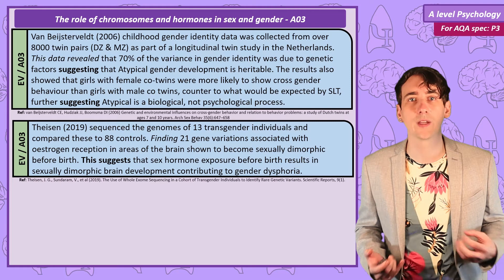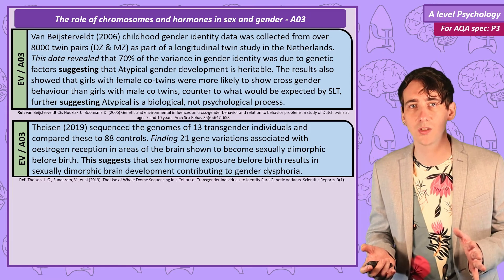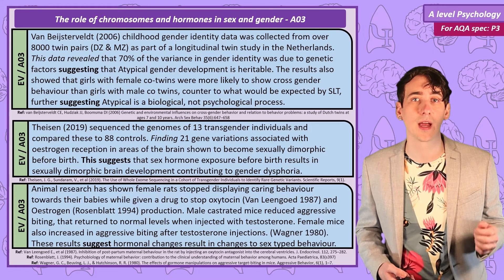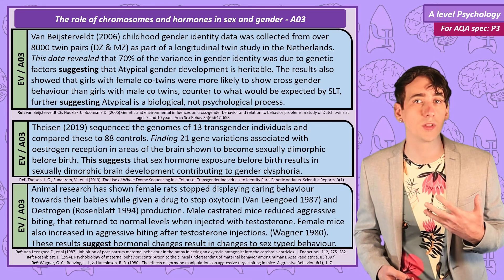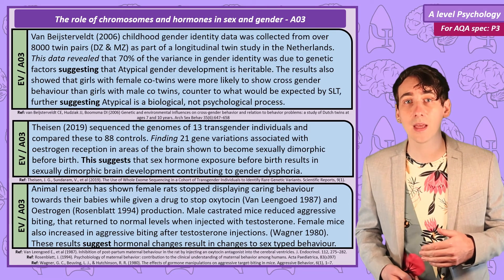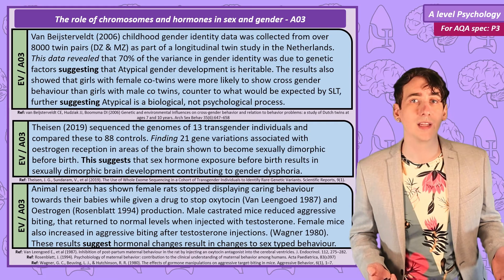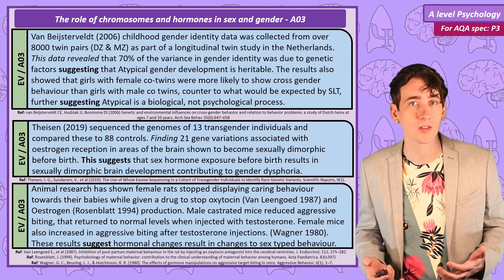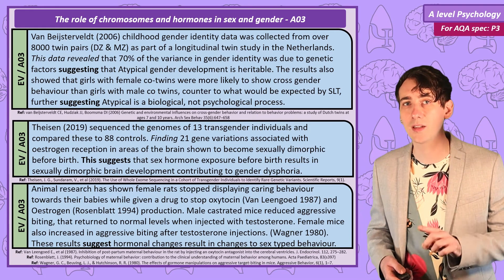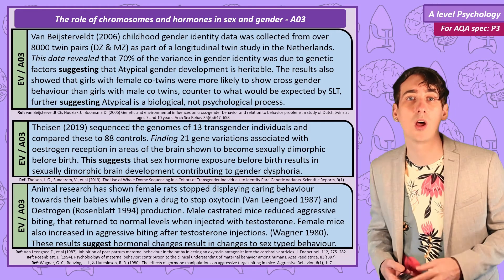Depriving people of sex hormones or exposing them to high levels just to see how behaviour changes would not be ethical, but these studies have been carried out on animals. It has been repeatedly shown that female rats and mice don't show the typical maternal caregiving behaviour if they are deprived of oestrogen and oxytocin, and that behaviour will restart when they are able to produce the hormone again. Also male mice that are castrated, so no longer produce high levels of testosterone, stop showing typical male biting aggression. But that aggression returns when they are injected with testosterone, and females who are injected show aggressive biting behaviour typical of the males.